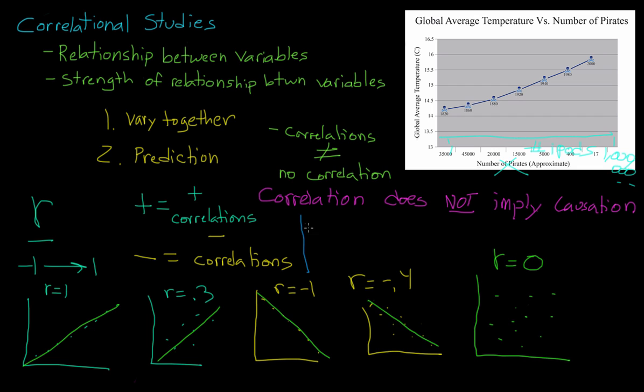The takeaway point is this. Whenever you see an r, whenever you see a correlational coefficient, you can tell two things about it. First of all, the positive and negative signs tell us the direction of the relationship. And how close the points are to a line tells us about the strength of the relationship. That should help keep you on track when you're looking at correlational studies.